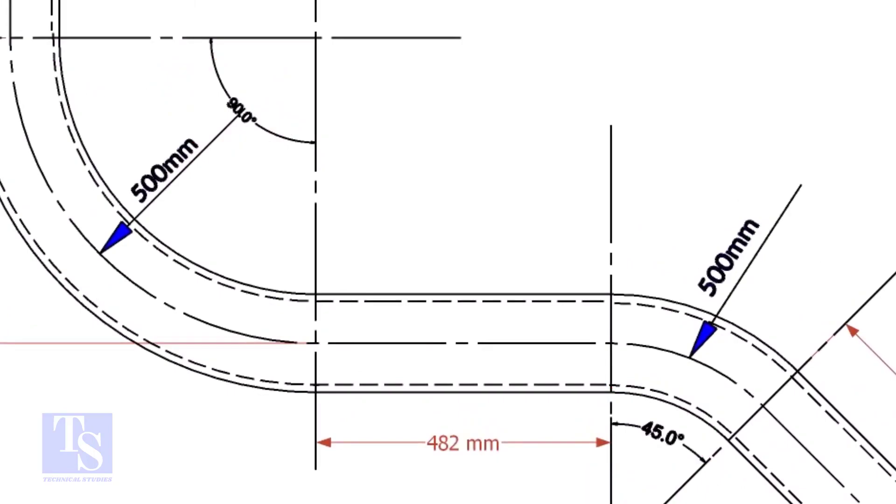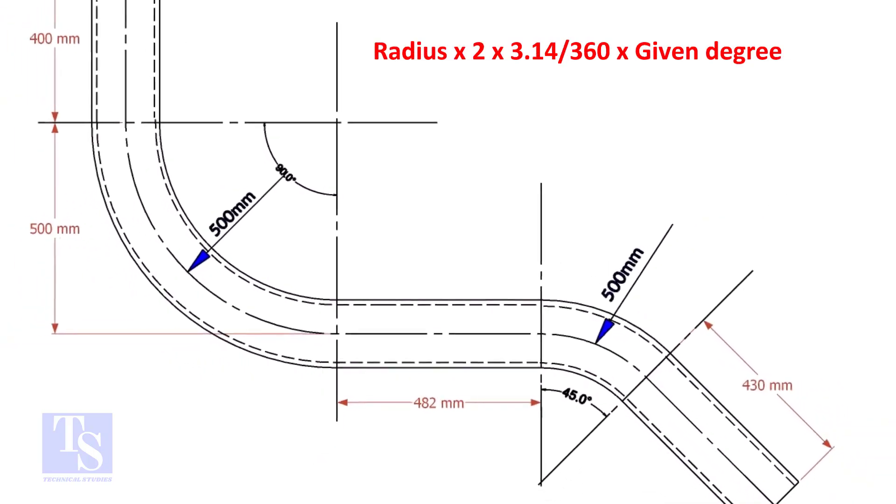Let us calculate the pipe length for the 90 degree. The formula is radius multiplied by 2, multiplied by 3.14, divided by 360, multiplied by the required degree.